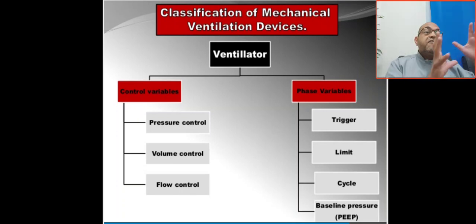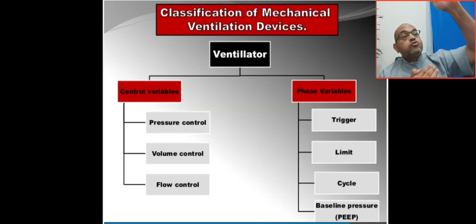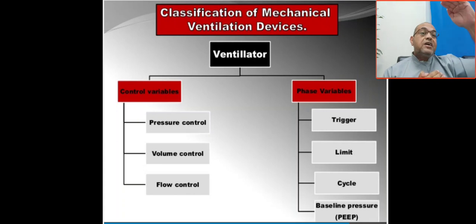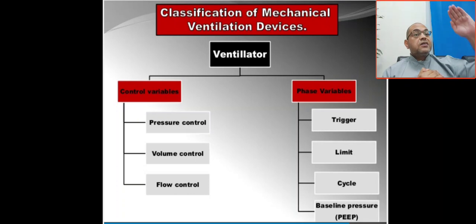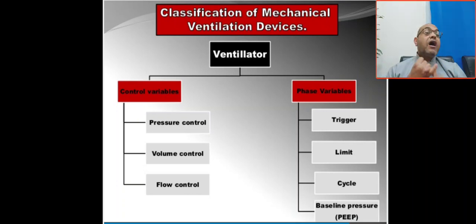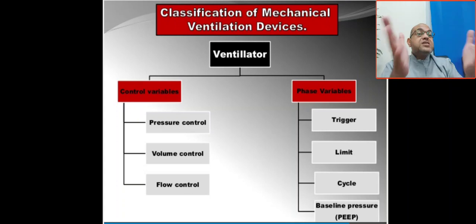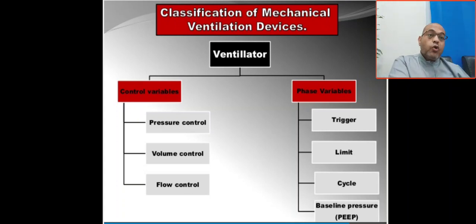The phase variable includes: the trigger, the limit, the cycle, and the baseline. Think of it as: starting (triggering), reaching maximum inspiration (limit/targeting), then termination (cycling). The breath starts with triggering, reaches its target or limit, then terminates. This describes the full inspiratory phase from start to termination.